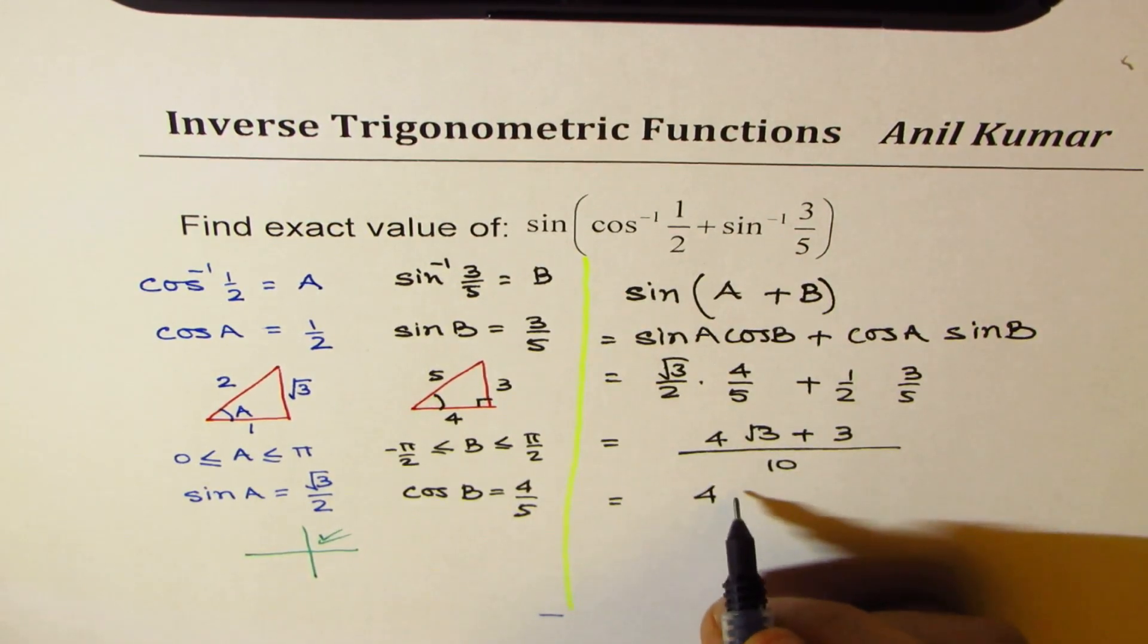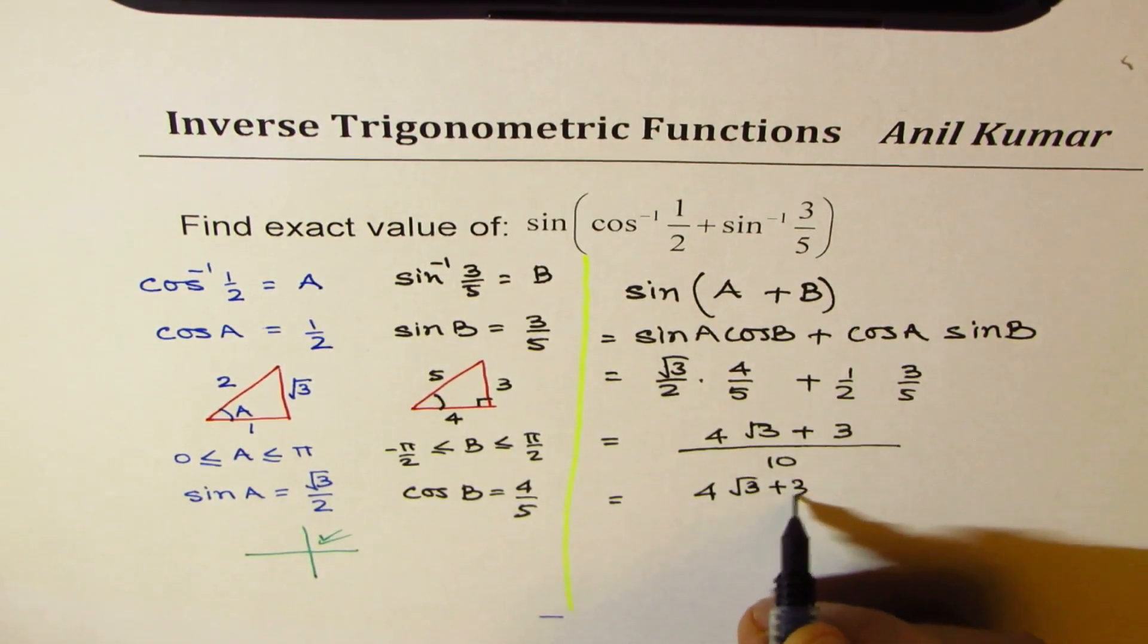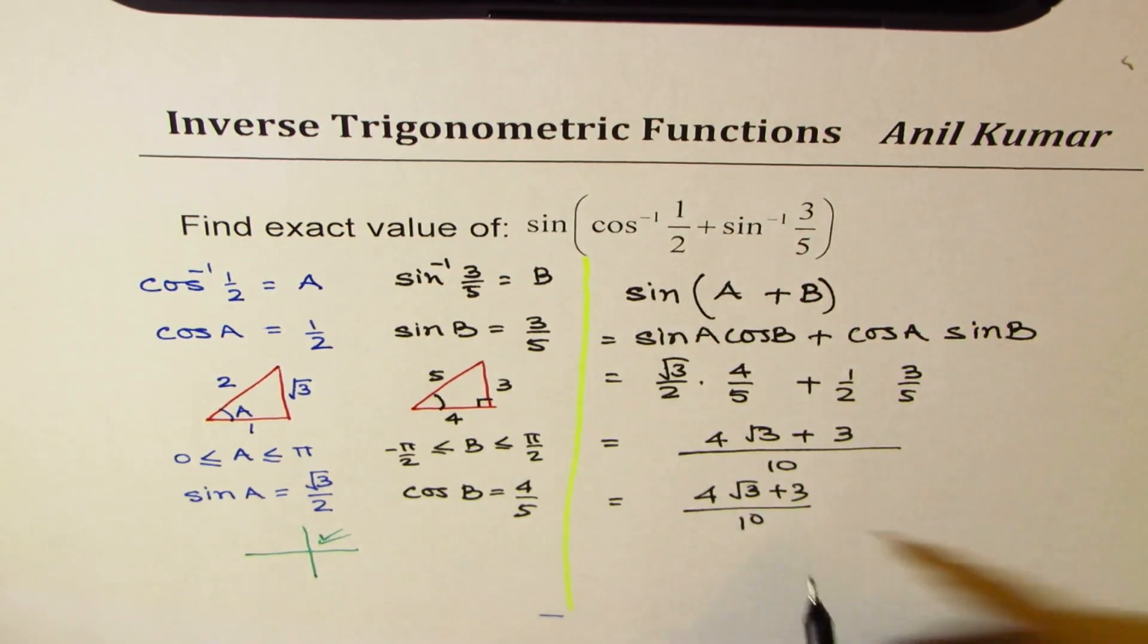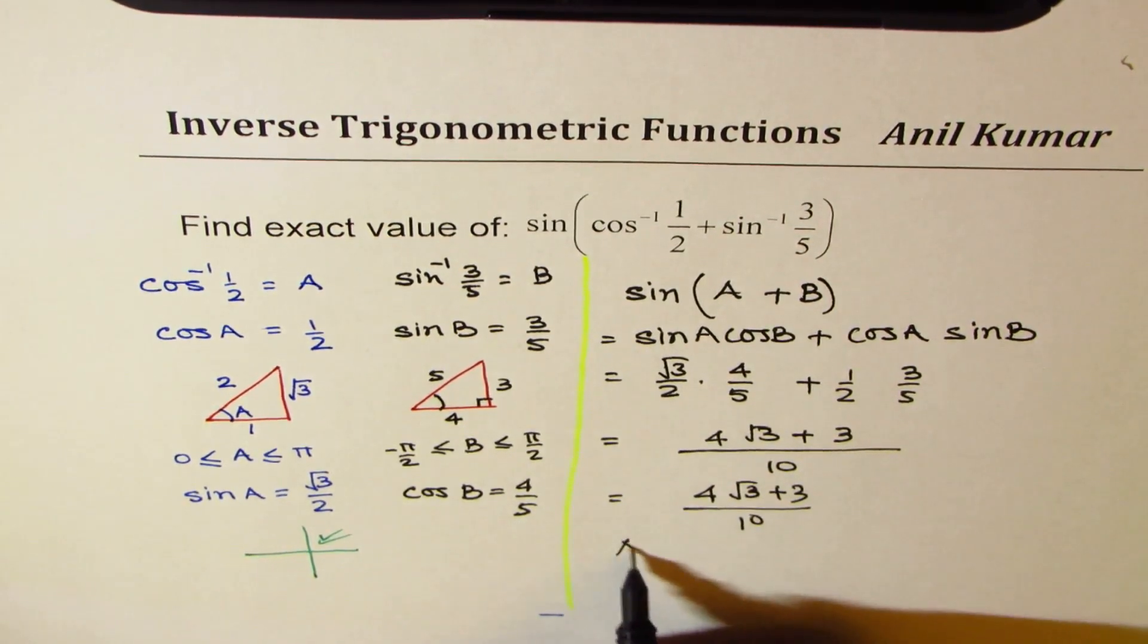So that becomes our answer. 4 square root 3 plus 3 over 10. This cannot be further simplified. So that becomes our answer.